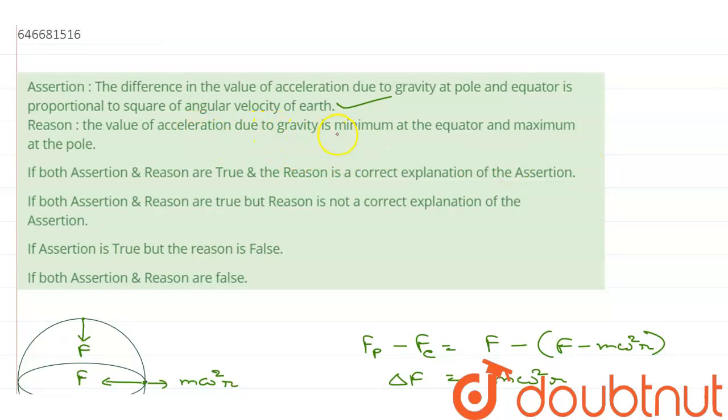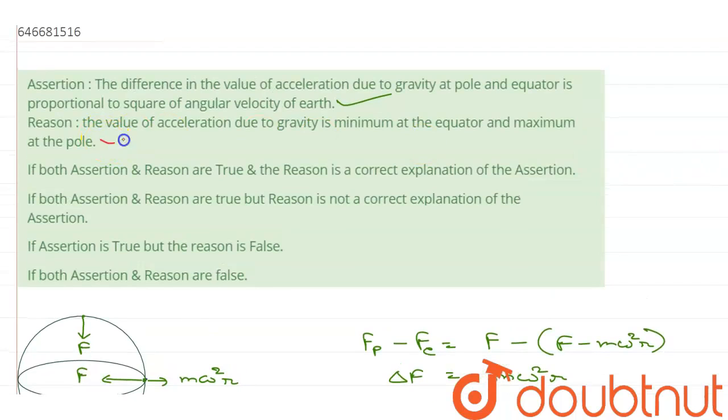So, the value of acceleration due to gravity is minimum at the equator, yes, and maximum at the pole, yes. So, this statement is also true.